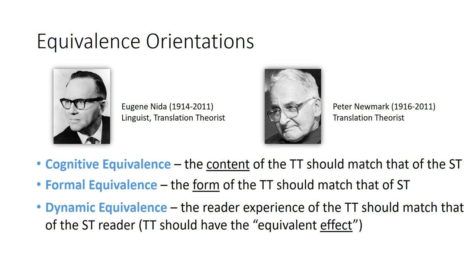When strategizing and deciding which translation approach to adopt, we talk about equivalence orientations. Equivalence is an important concept in translation — we're trying to produce a target language text that is equivalent or corresponds to the source text at as many levels as possible. Theorists Eugene Nida and Peter Newmark are credited with these three types of equivalence. The first is cognitive equivalence: equivalent content, meaning the content of the target text should correspond to the content of the source text.